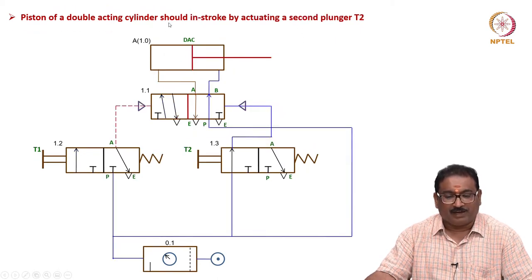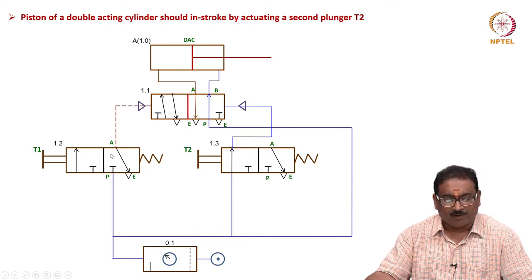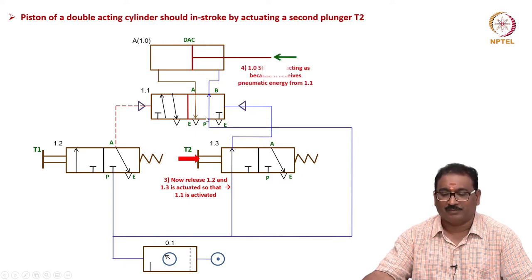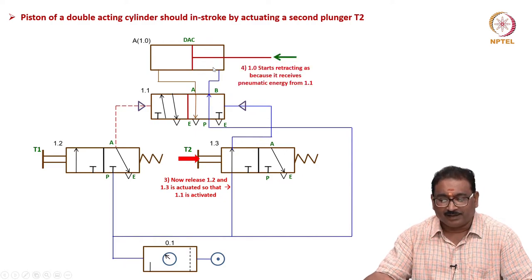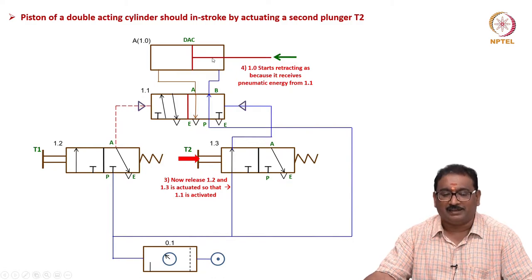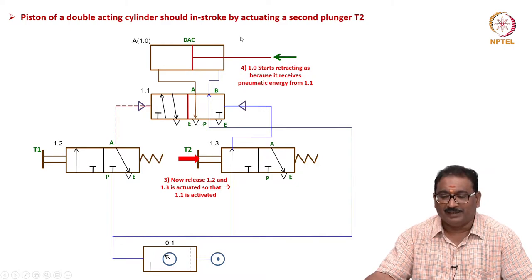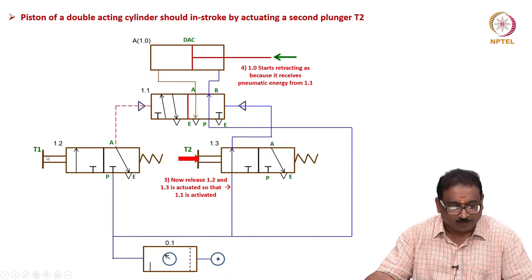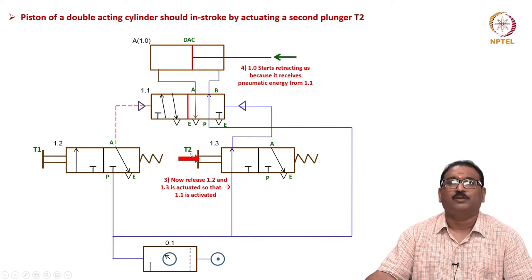Then for the in-stroke by actuating T2: press it again, the signal goes here, no signal on the other side. When you press T2, the pneumatic energy comes here, actuates this position, air enters the tail side, pushing the piston back, and air exits to atmosphere through this port. Meaning, it retracts through plunger T2 - extension through T1, retraction through T2.